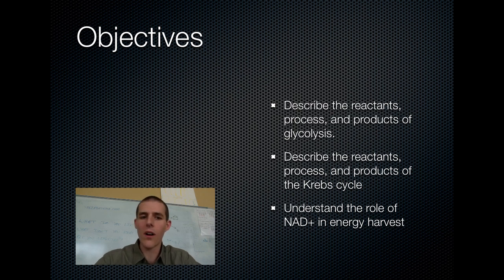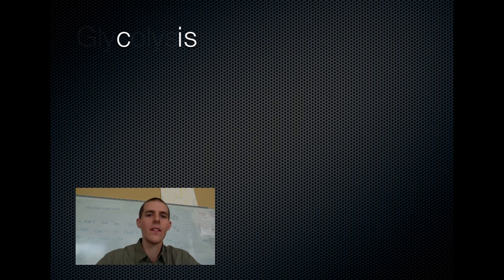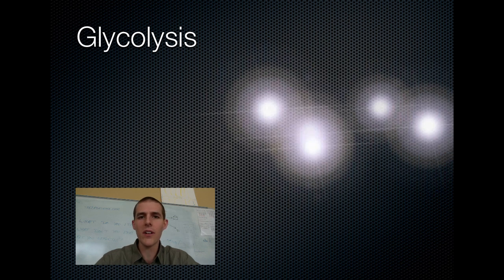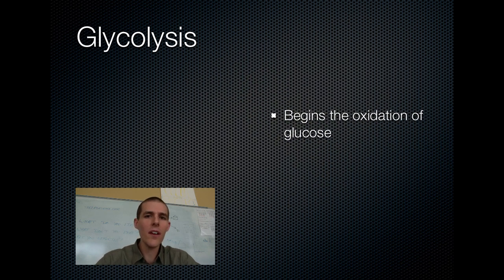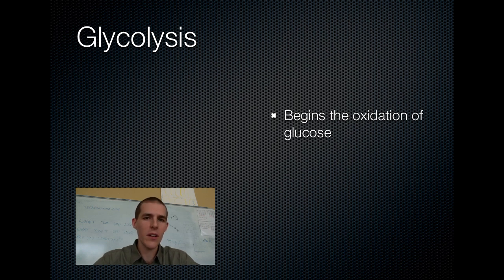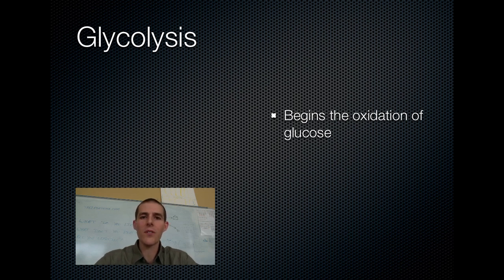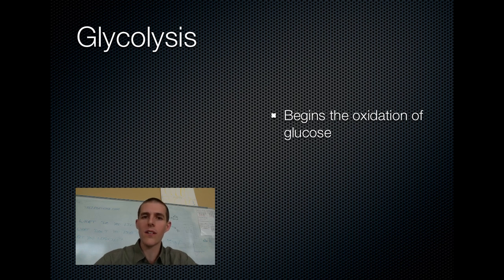So we're going to start out with glycolysis. This is something you might remember vaguely from your regular biology class — we're going to add some more detail. First, an overview. Glycolysis begins the oxidation of glucose. Oxidation is where you're stripping electrons off something, and every time you strip electrons off something, it gives up some energy. The whole process of cellular respiration, especially glycolysis and Krebs, is to oxidize glucose all the way down into water and carbon dioxide — going from a big unstable molecule to two smaller stable molecules, getting some energy out along the way.